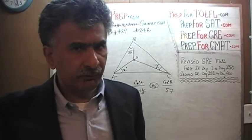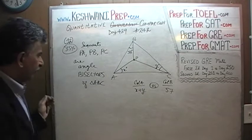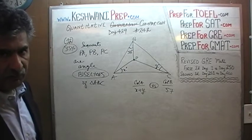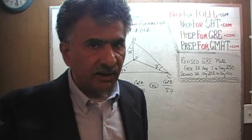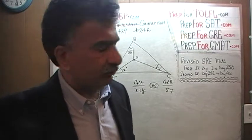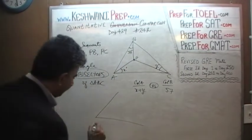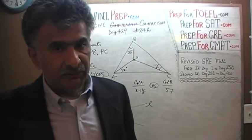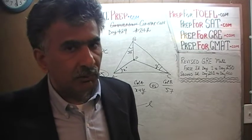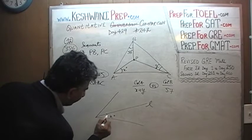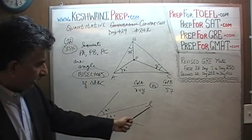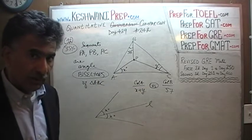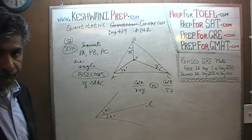The most crucial bit of information in this question is the word 'angle bisectors.' In the real exam it does not appear in capital letters. What does it mean for a line segment to be an angle bisector? For example, here is an angle and here is line L. If line L is an angle bisector, it means exactly what it says — 'bi' means two — it cuts the angle into two equal parts. So if this is X degrees, then so is the other part.